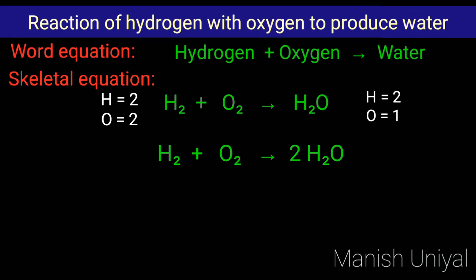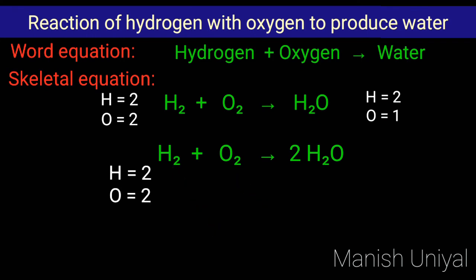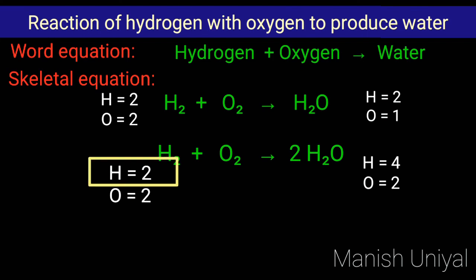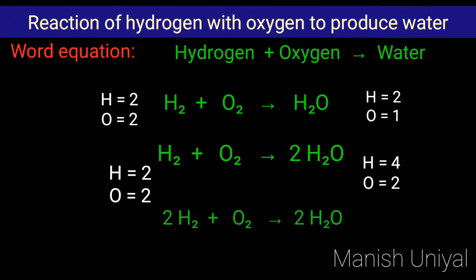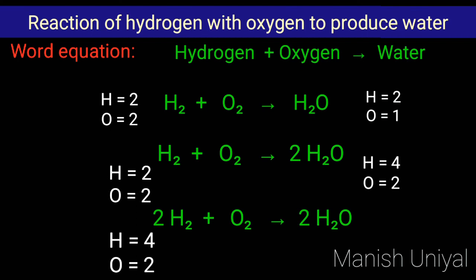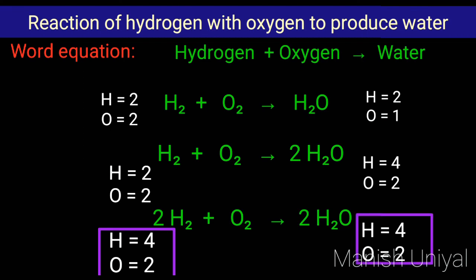Again, we compare the number of atoms: in the reactant side, hydrogen is 2 and oxygen is 2; in the product side, hydrogen becomes 4 and oxygen is 2. Now we can see in the reactant side hydrogen is 2, and in the product side hydrogen is 4, so we have to balance hydrogen. We will write 2 in front of H₂ in the reactant side. Our equation becomes: 2H₂ + O₂ → 2H₂O. On comparing: in the reactant, hydrogen is 4 and oxygen is 2; in the product, hydrogen is 4 and oxygen is 2. The atoms in the reactant side equal the atoms in the product side — it is a balanced chemical equation.